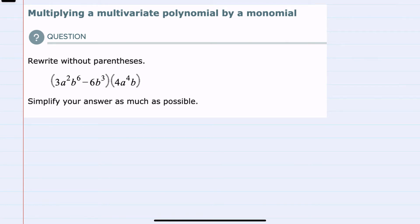We're asked to rewrite this without parentheses. The parentheses indicate multiplication, and I have a binomial—two terms inside the parentheses—being multiplied by a single term. To do so, I'm going to distribute.